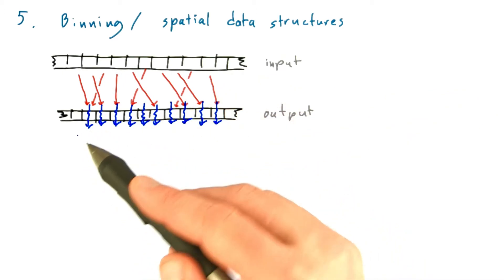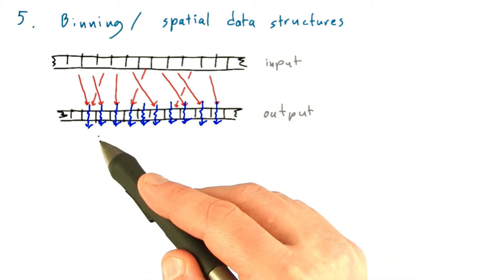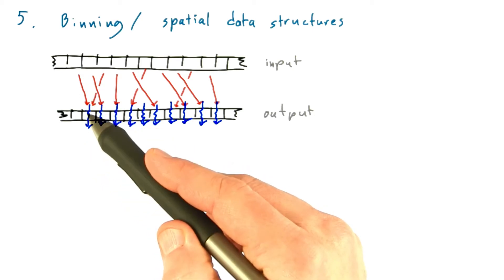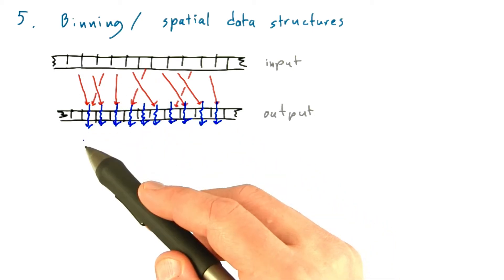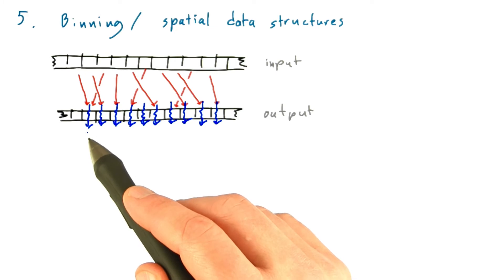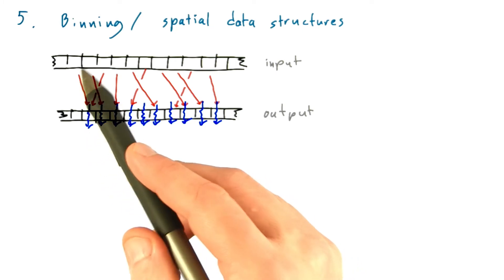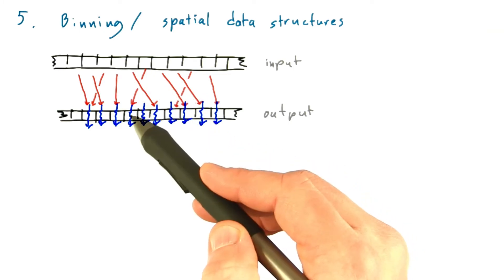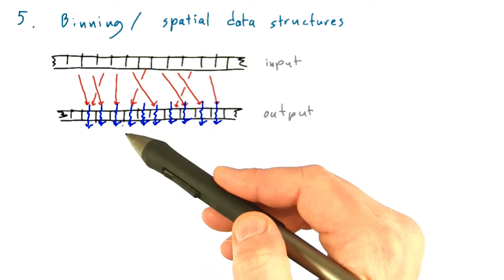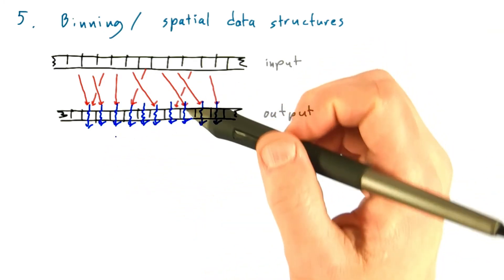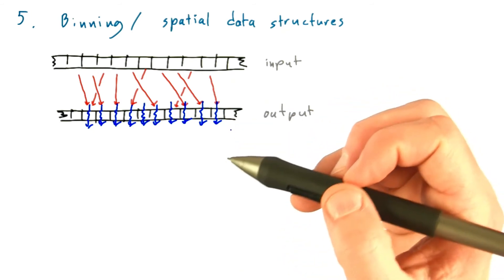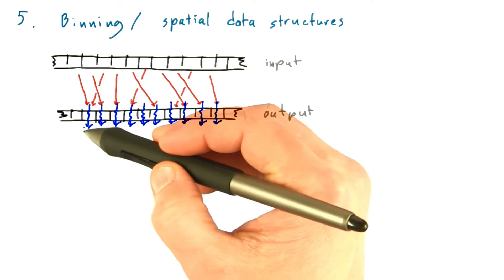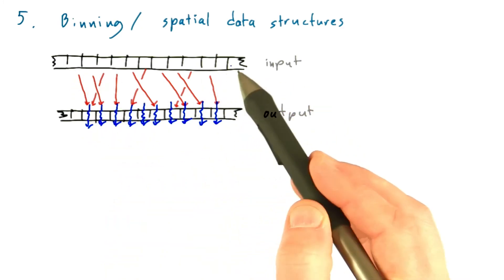Now sometimes it can be hard to orchestrate this gather operation — it can be hard to figure out which inputs matter for a given output. One thing you can always do is have every thread assigned to an output element check every possible input element to see if it will contribute, but obviously that's going to be ruinously expensive. So what we want to do is optimize away most of the redundant work that you would be doing if all of these threads were checking all of these inputs.